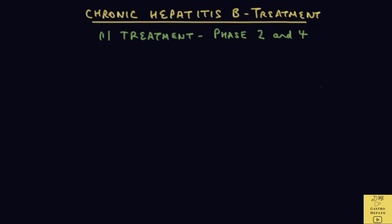Treatment reduces the amount of virus and in doing so decreases liver cell damage, helping to prevent scarring or fibrosis, liver cirrhosis, and liver cancer. Treatment of chronic hepatitis B depends on what stage the patient is in — not all patients require treatment. Treatment is only given for patients in phase 2 and phase 4, because it is at these stages that liver damage is taking place and antiviral medicines are effective.